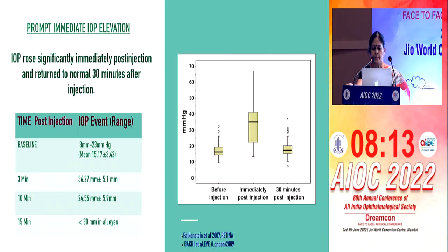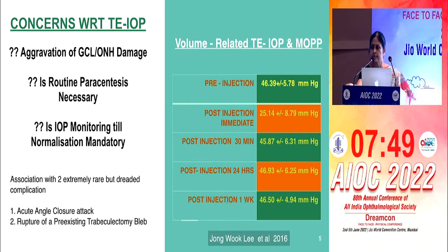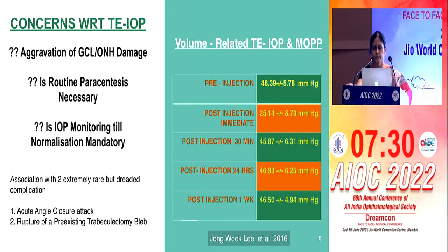Regarding transient IOP elevation: the IOP may go as high as 30s or even 40s. This is alarming because the transient IOP elevation could aggravate ganglion cell layer and optic nerve head damage in an eye with an already compromised posterior segment. The question is whether routine paracentesis is necessary in all these patients or whether IOP monitoring until normalization is sufficient. This transient high IOP spike could be associated with two dreaded but rare complications: blowout of a trabeculectomy bleb, or — when a large bolus is injected into the vitreous — forward displacement of the lens-iris diaphragm resulting in acute angle closure.